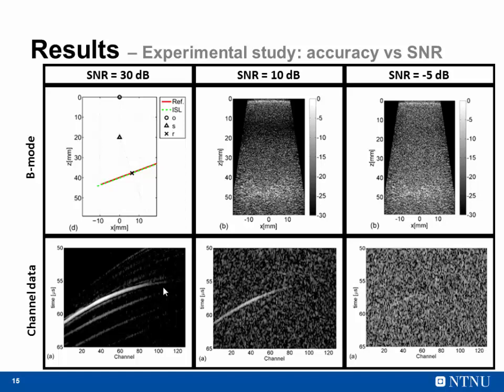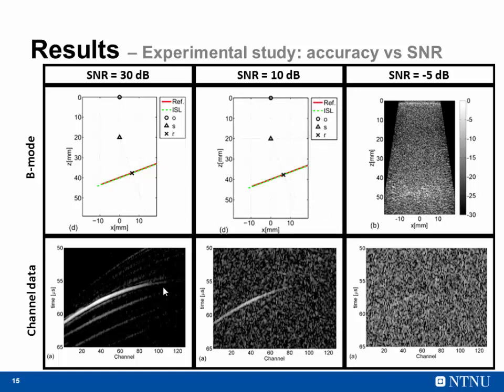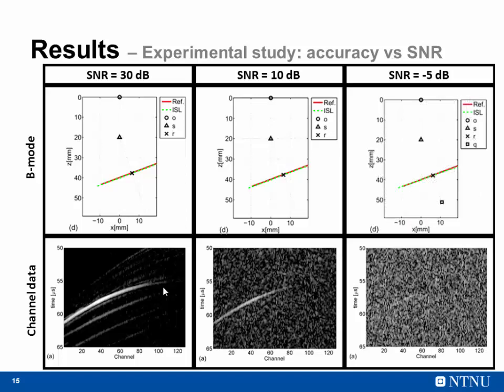In the second case with 10 dB SNR, we no longer can see the reflector in the B-mode image. However, in channel data the waveform is still very clearly visible — the only reason we don't see it in B-mode is because we are focusing in the wrong location. The algorithm is still able to locate this waveform and reconstruct the reflector. In the last case with minus 5 dB SNR, we see nothing in B-mode, but a small correlation is still barely observable in the channel data. The image source localization method is able to locate that correlation and place the reflector in the right position, though now the image source is not in the same location, which is why we solve the quadratic equation rather than assuming P = 0.5.